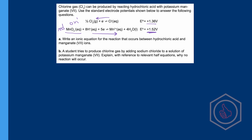On to question B. A student tries to produce chlorine gas by adding sodium chloride to a solution of potassium manganate 7. Explain with reference to relevant half equations why no reaction will occur. This is a really sneaky question. Sodium chloride, if added to a solution, will dissociate into Na+ and Cl- ions. The sodium ions aren't involved in the half equations, but the Cl- ions are. We know the Cl- ions need to be oxidised to make chlorine gas.